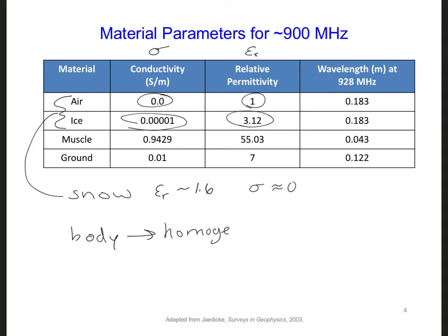So the body, we're going to say, is homogeneous. Muscle tissue is the most representative tissue for a human body at about 900 megahertz. So we can set the homogeneous body tissue to the electrical parameters of muscle.